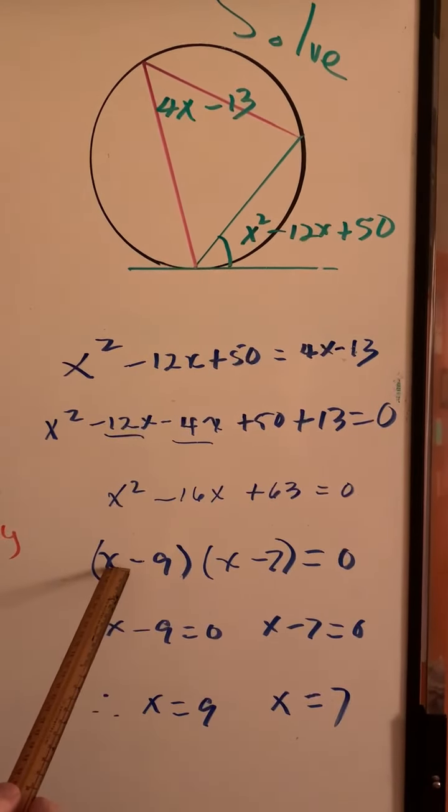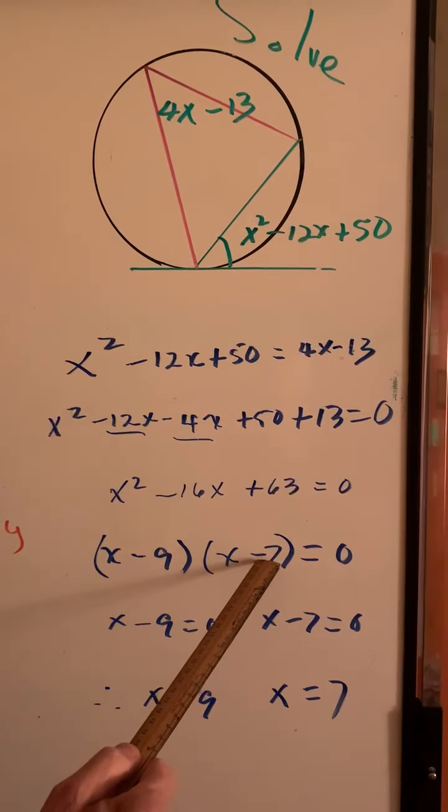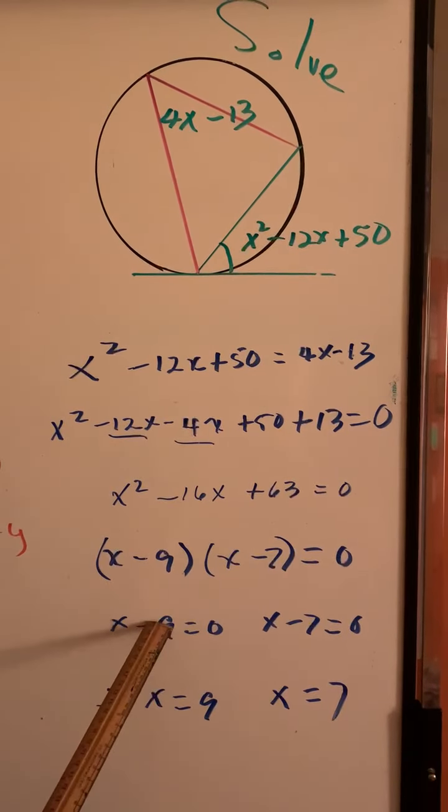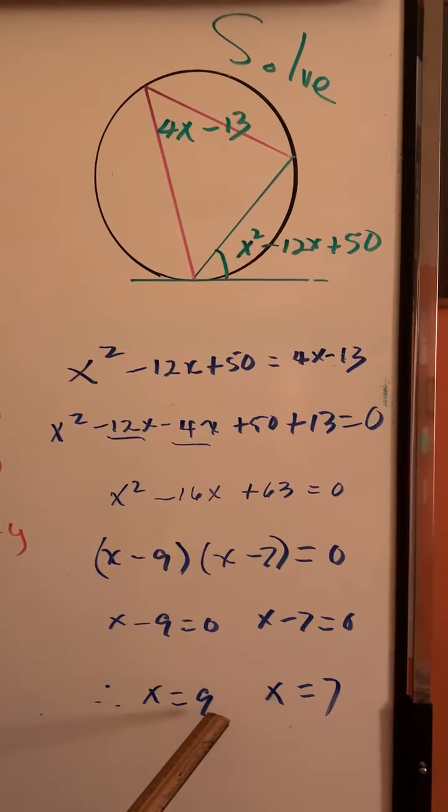This factor is 0 when x is 9. This factor is 0 when x is 7. And this is your solution.